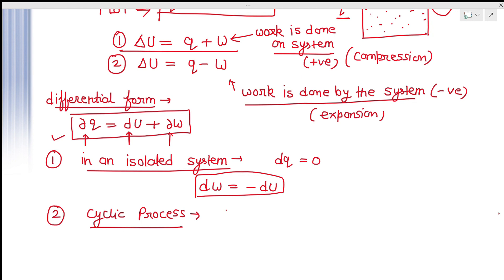In a cyclic process, dU = 0 because internal energy is a state function that depends only on the initial and final state of the system. In a cyclic process the initial and final states are the same, so dU = 0. Therefore δq = δW, meaning all the heat given to the system is used in doing work.